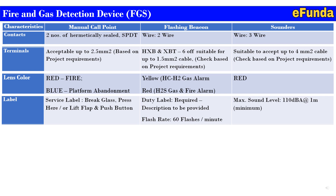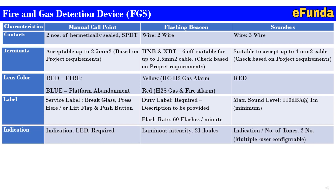The label for the sounder specifies a maximum sound level of 110 dBA at one meter minimum distance, so that the sound is easily audible to the operator or personnel on location. Indication for the manual call point is an LED light type. For the flashing beacon, the luminous intensity is 21 joules. For the sounder, the number of tones is two — multiple user configuration or configurable tones are available.